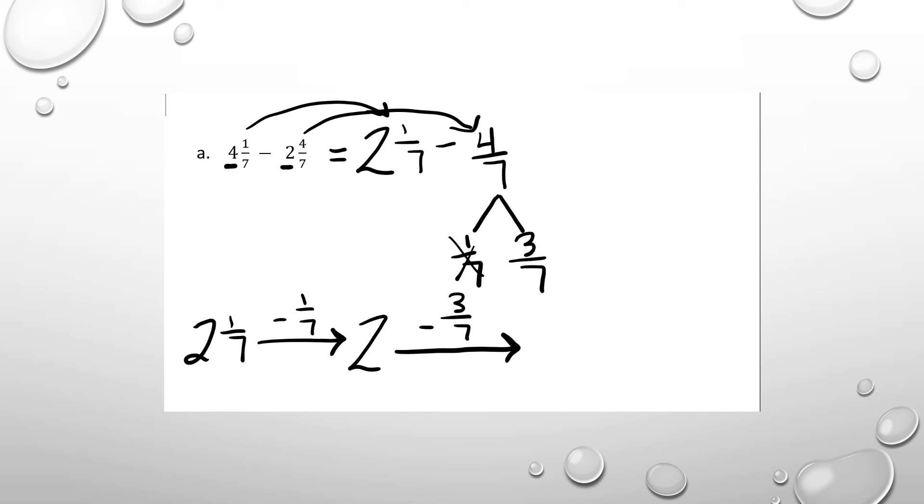So in my head, I'm going to think 7/7 minus 3/7. And that would be 4/7. And because we subtracted and we've gone back 1 whole, I'm not at 2 wholes anymore. I'm now at 1 whole.